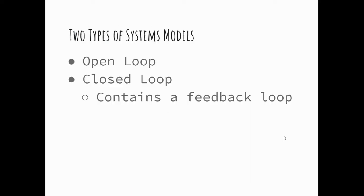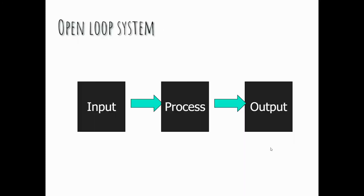There are two types of models that we're going to go over: an open loop system and a closed loop system. The open loop system looks like this. It has an input, a process, and an output.